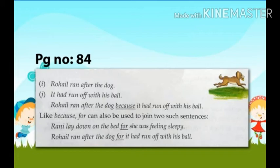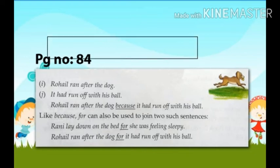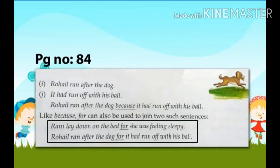Like 'because', 'for' can also be used to join two such sentences. For example: 'Rani lay down on the bed, for she was feeling sleepy.' And: 'Roheil ran after the dog, for it had run off with his ball.' Here these two sentences are joined by using 'for' instead of 'because'.